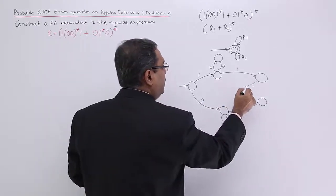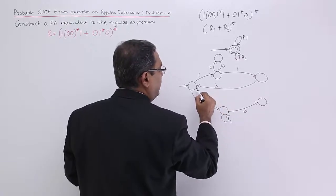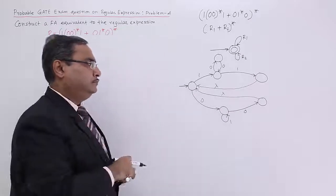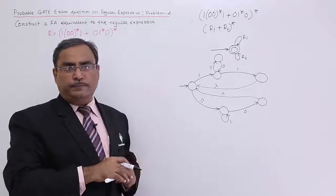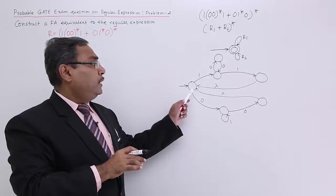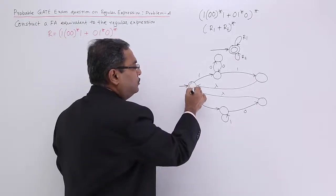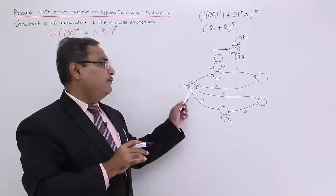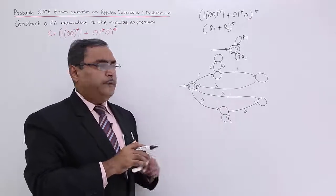As we are having star there, as a whole we are having star. I should be having a lambda transition here and I should be having a lambda transition here. That means it may also be that none of these expressions r1 or r2 occur, so it will be the final state as well as the initial state. That is my expected transition diagram.